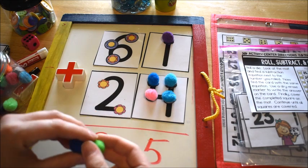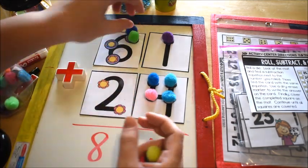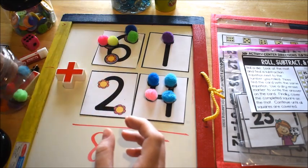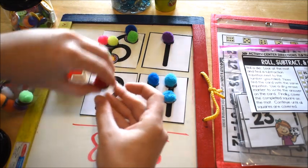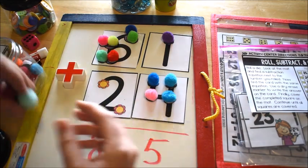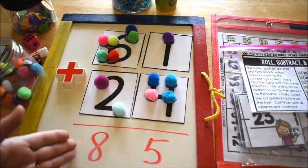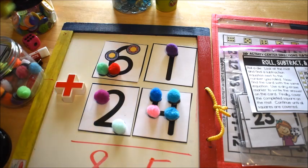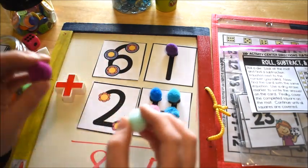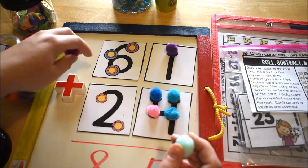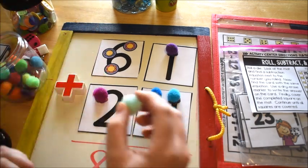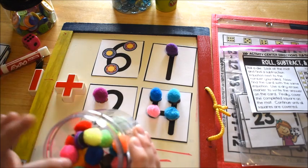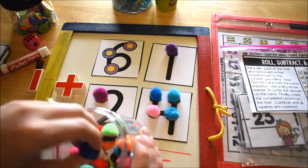Here we have six plus two. Now when the picture, the touch point has a circle around it, then we count that one twice. So it's one, two, three, four, five, six, seven, eight. So six plus two equals eight. Some kids aren't going to need to do that. They can start with a bigger number and then just use the manipulatives on the second number, so they can say six and then go seven, eight, and that will help them.